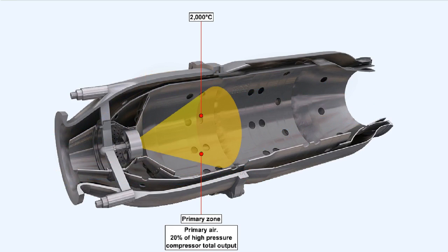The temperature of the gases at the center of the primary zone reaches about 2000 degrees Celsius. This is far too hot for the materials of the nozzle guide vanes and turbine blades, so a further drop in temperature is required before the gases can be allowed to exit the combustion chamber.